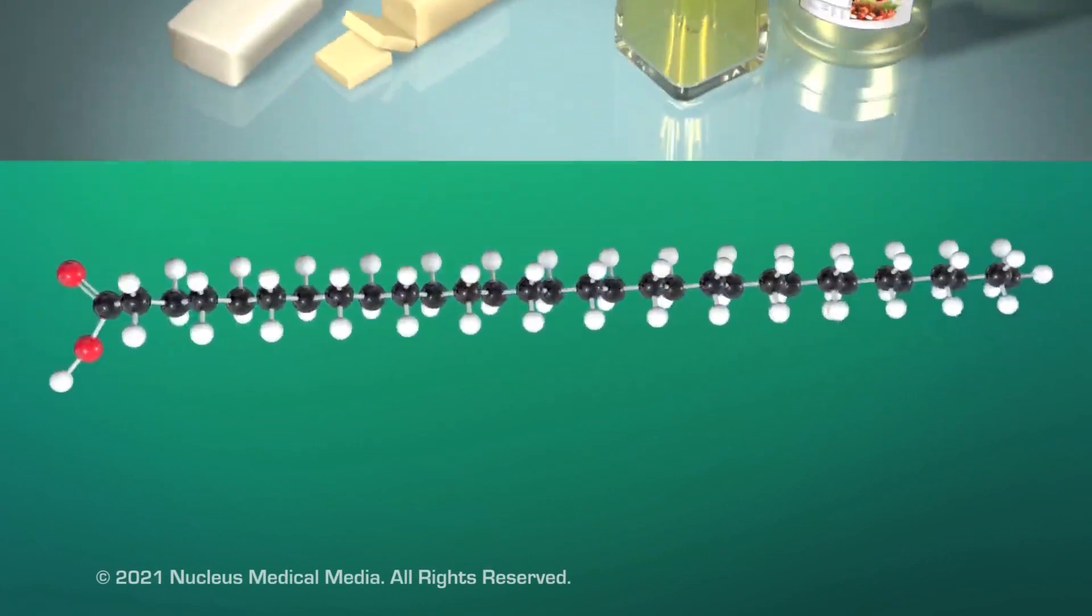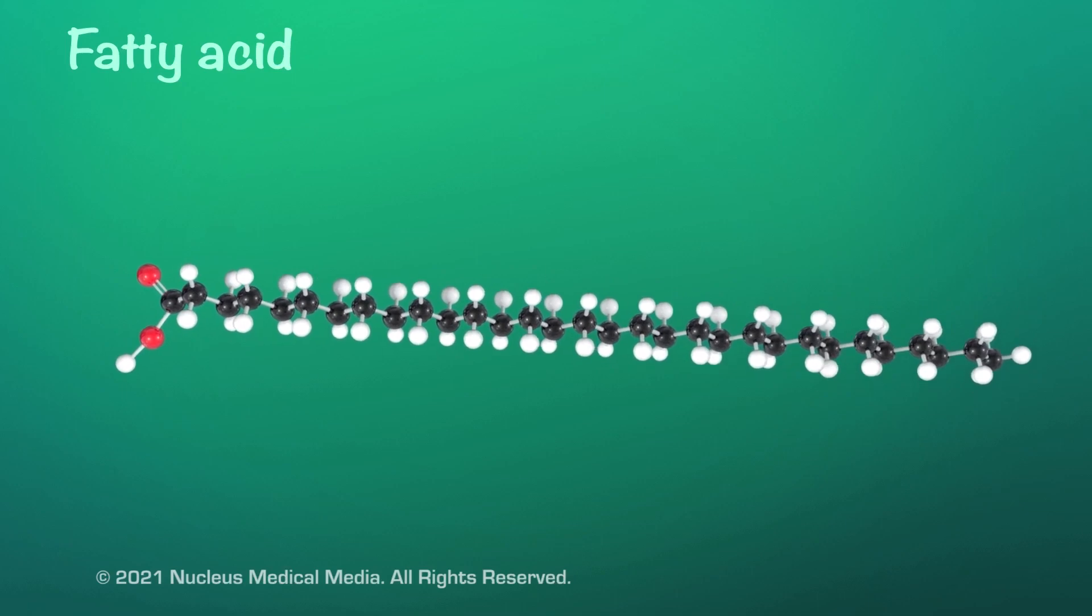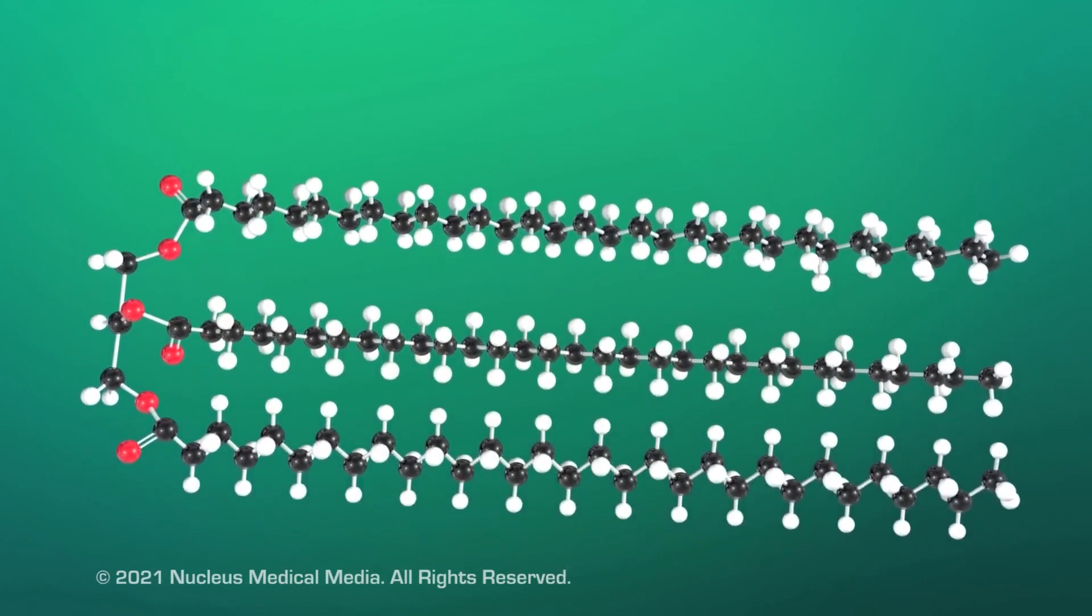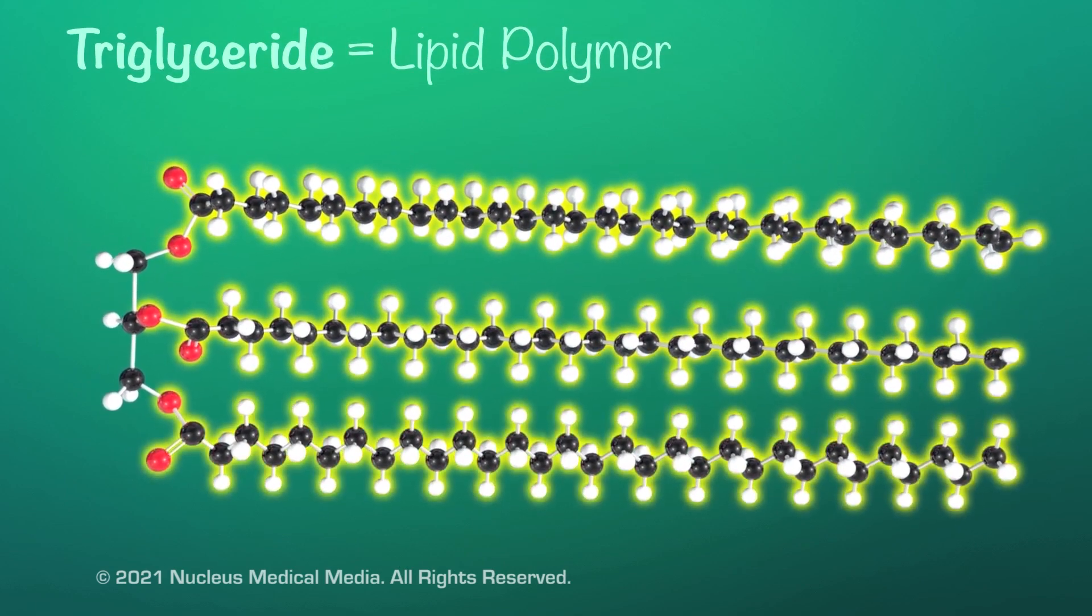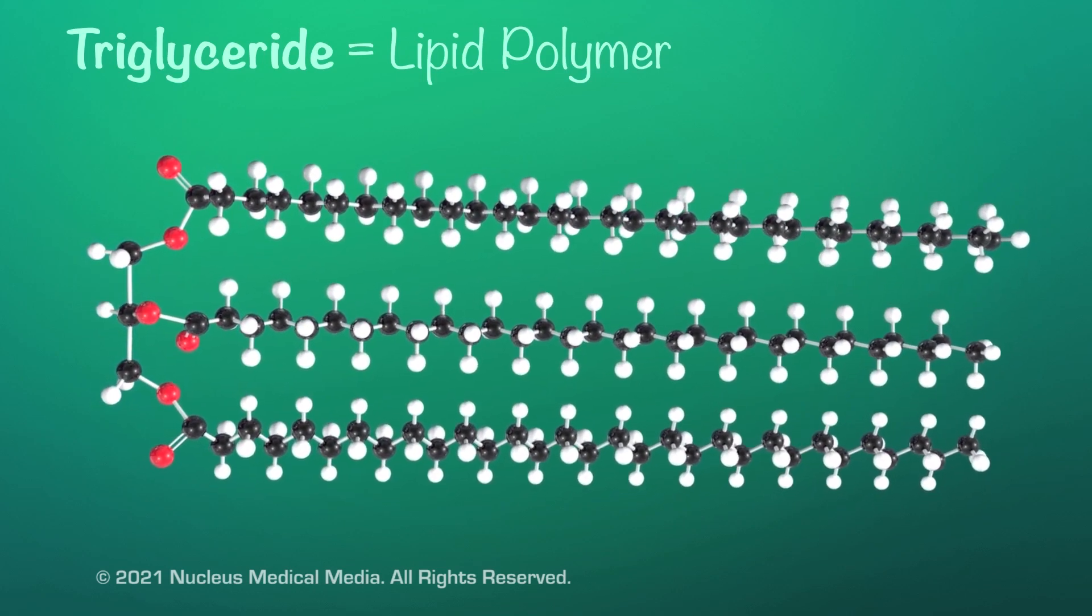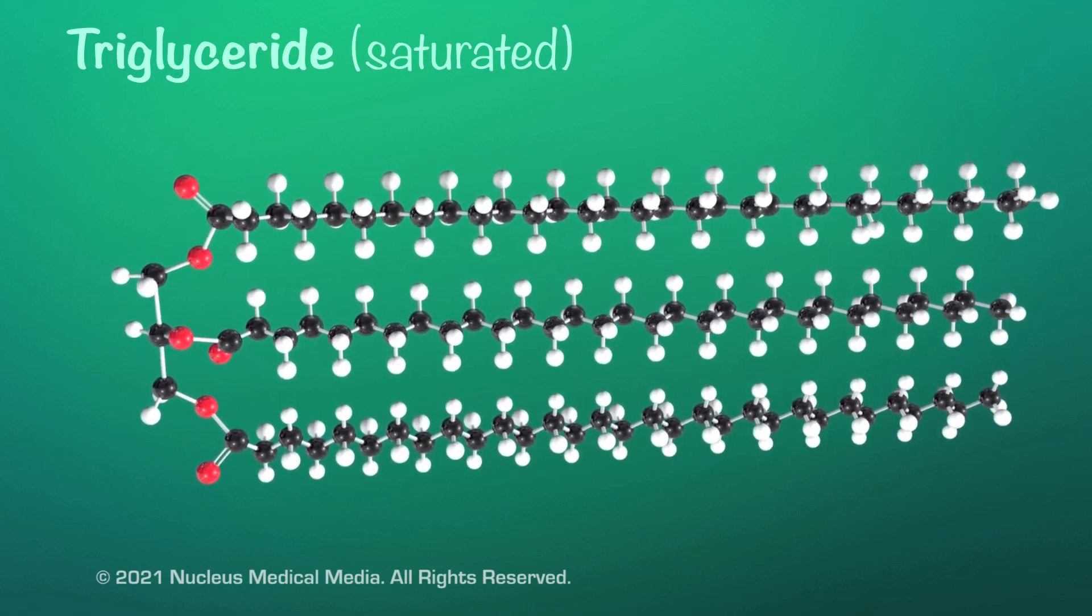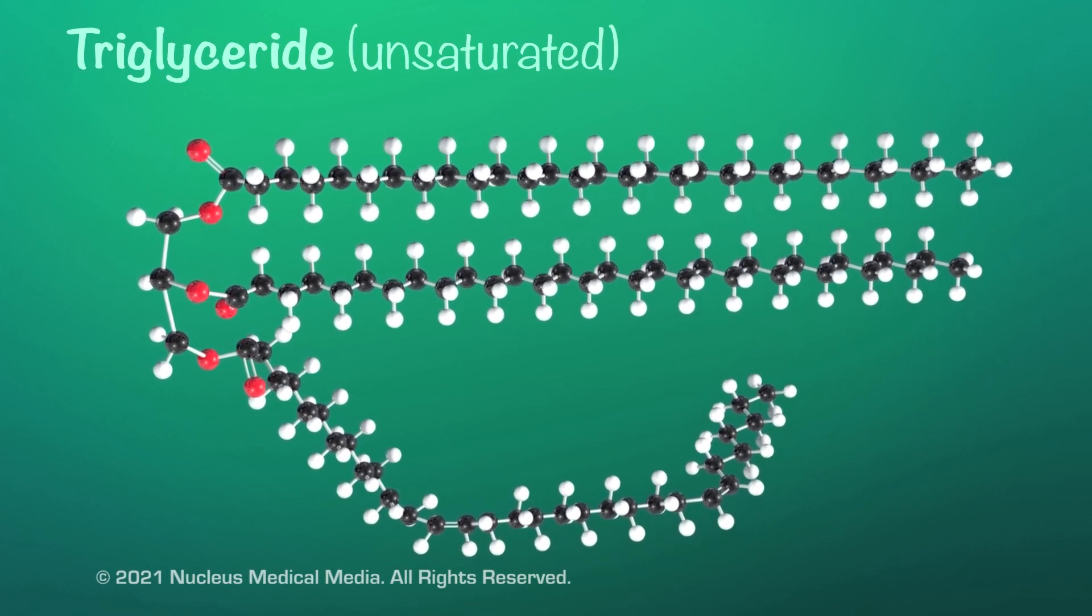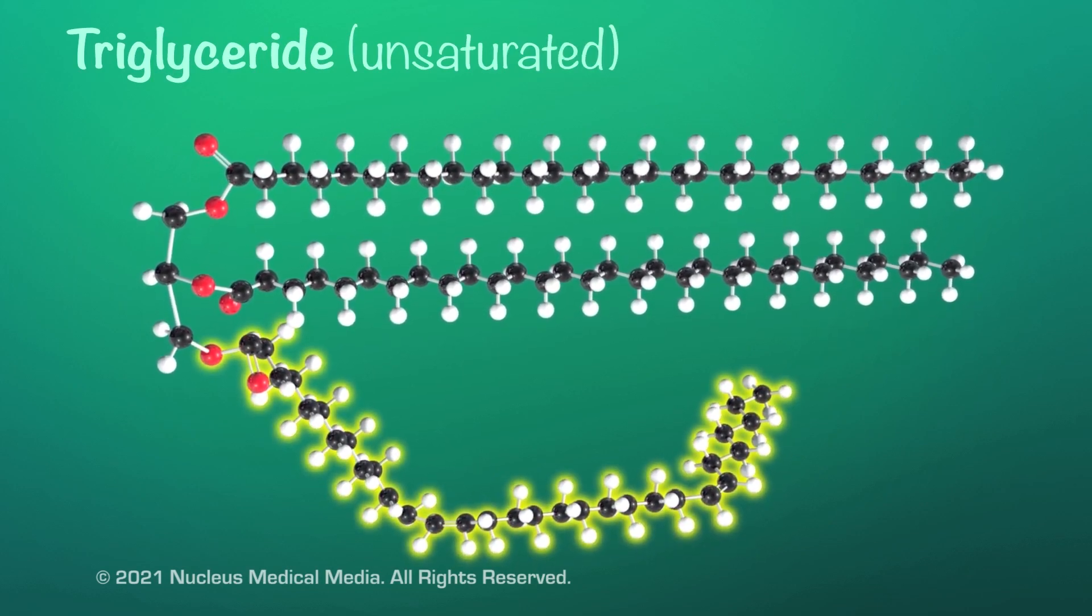Now that we've talked about fatty acids as lipid monomers, what is a lipid polymer? A lipid polymer, called a triglyceride, is formed when three fatty acids bond to a glycerol molecule. A triglyceride is saturated if it contains only saturated fatty acids. And a triglyceride is unsaturated if it contains any unsaturated fatty acids.